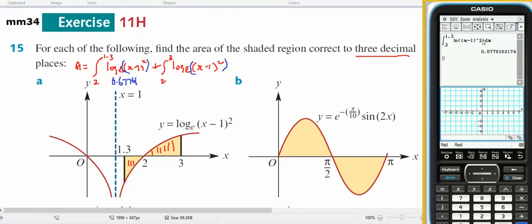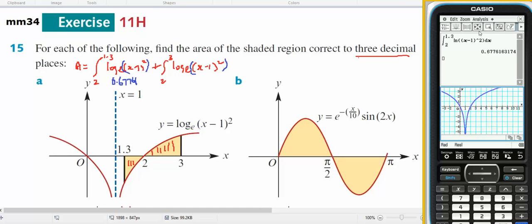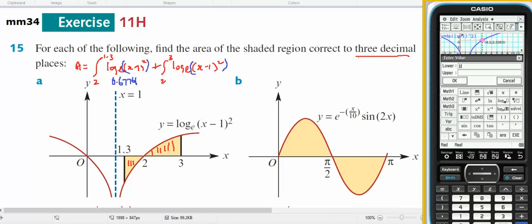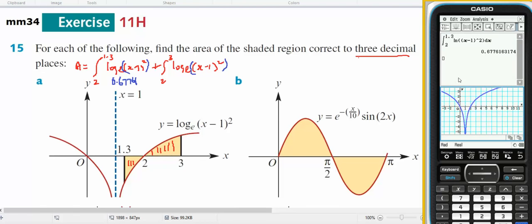I'm just going to double check that. If I take this. Okay, so let's go analysis, analysis GSOL integral from 1.3 to 2. And 0.776. That's perfectly correct.